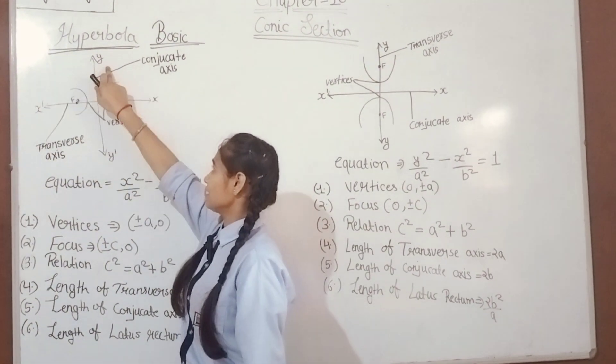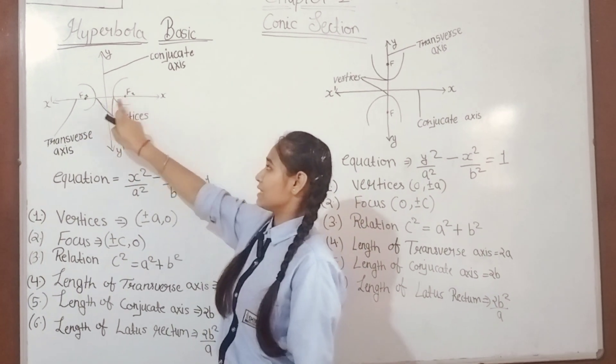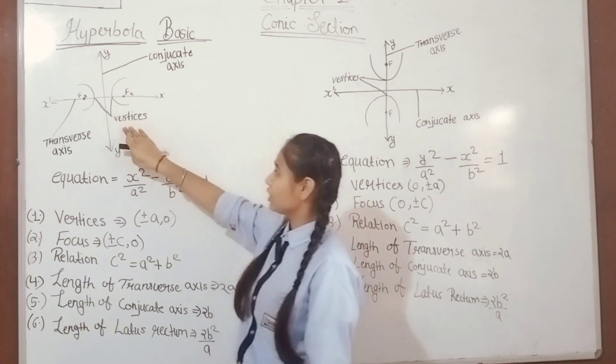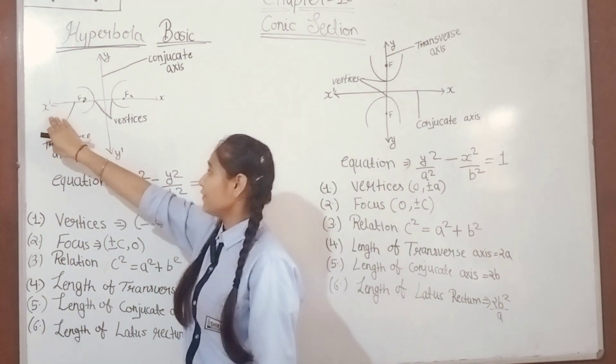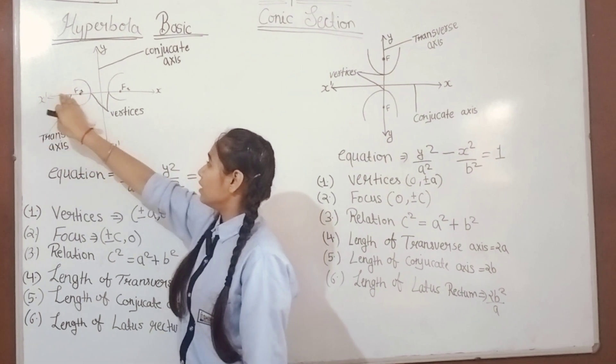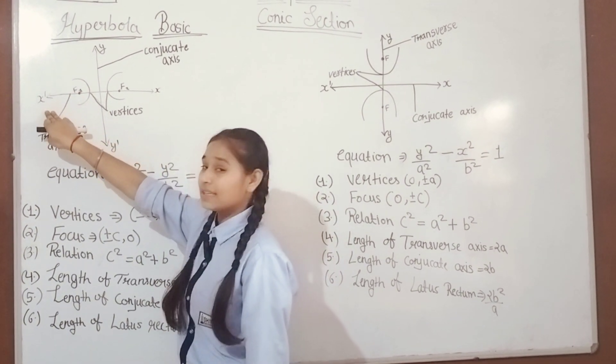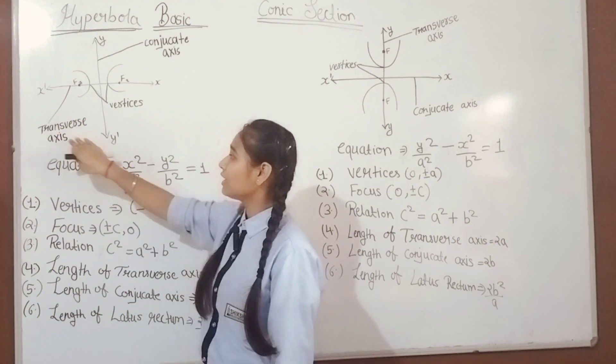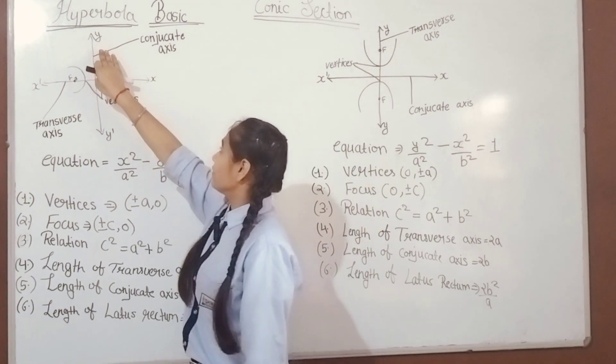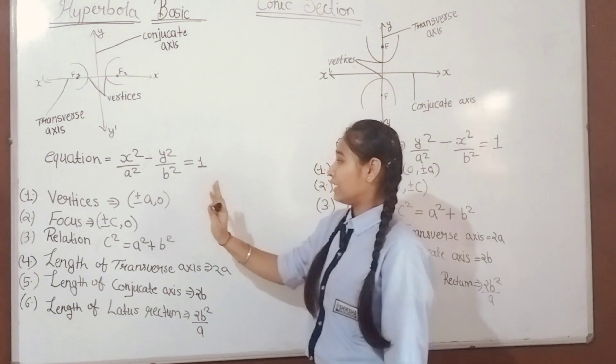This is the x-axis, this is the y-axis. There are two foci, f1 and f2, and two vertices. If the hyperbola is on the x-axis, then x is called the transverse axis. The other axis is called the conjugate axis.